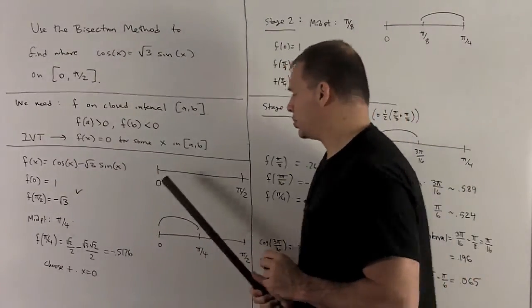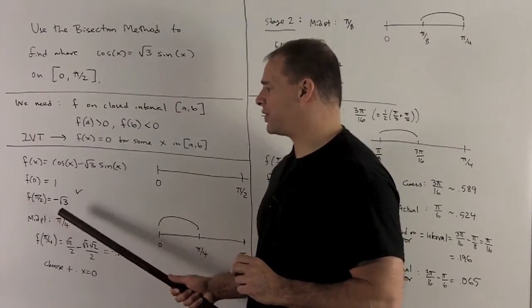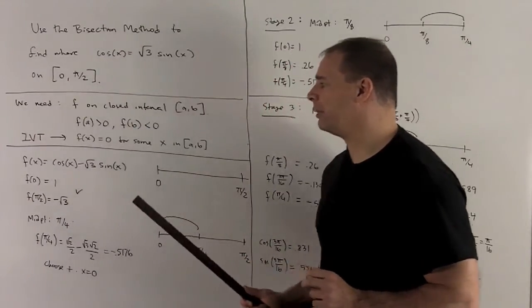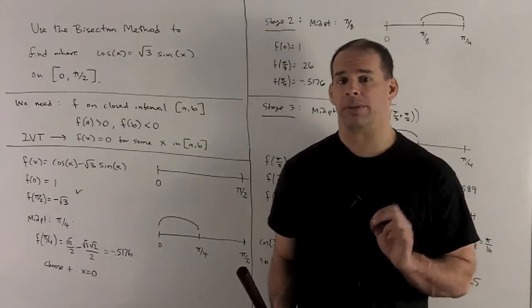Then we notice, we check on the endpoints, f(0) is equal to 1, f(π/2) is going to give me minus radical 3. So these definitely have opposite signs. So the intermediate value theorem will apply.